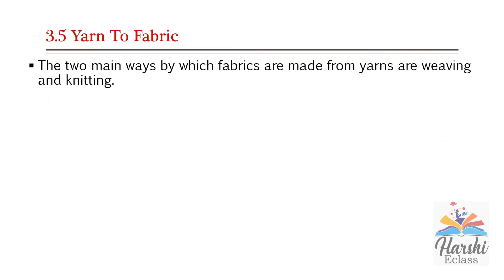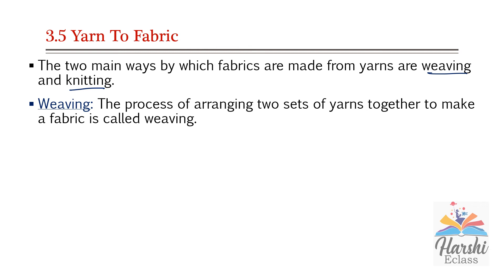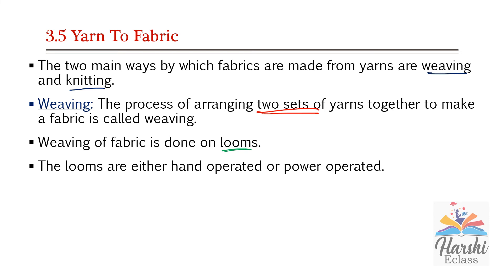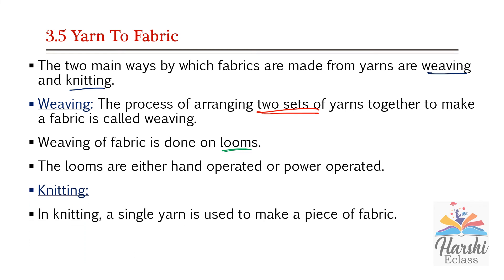Yarn to fabric — the two main ways by which fabrics are made from yarns are weaving and knitting. Weaving is the process of arranging two sets of yarns together to make a fabric. Weaving a fabric is done on looms, which are both hand-operated or power-operated. In knitting, a single yarn is used to make a piece of fabric, unlike weaving where two sets of yarns are used.